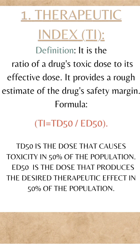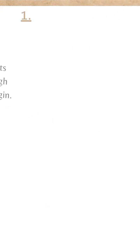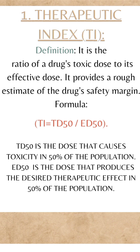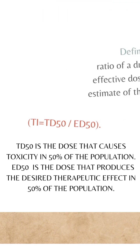Formula: TI = TD₅₀ / ED₅₀. TD₅₀ is the dose that causes toxicity in 50% of the population. ED₅₀ is the dose that produces the desired therapeutic effect in 50% of the population.